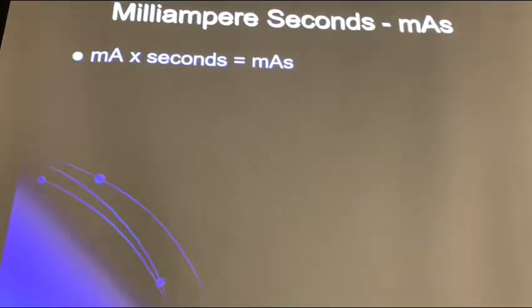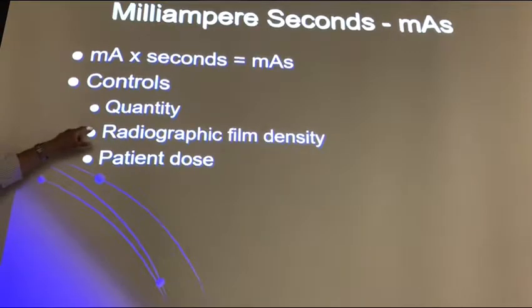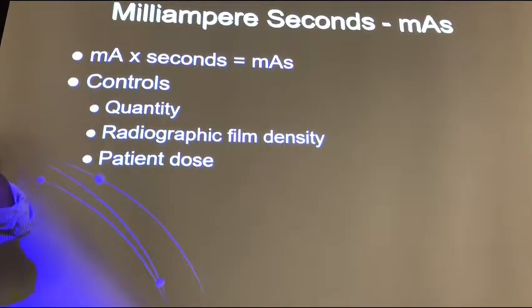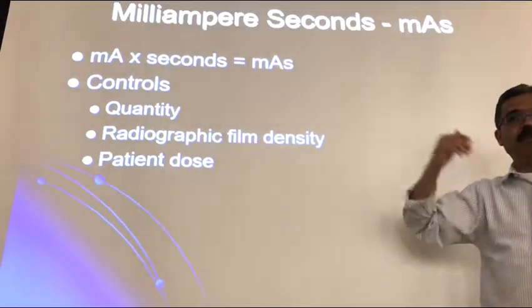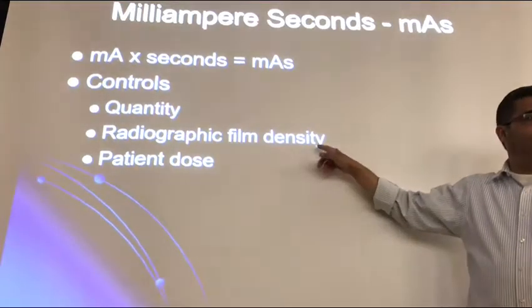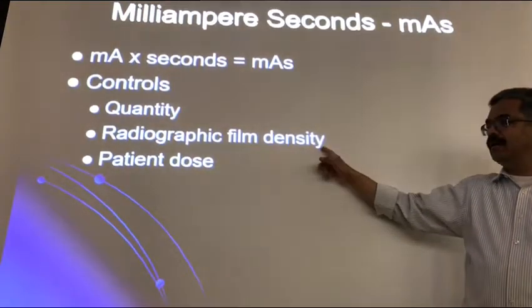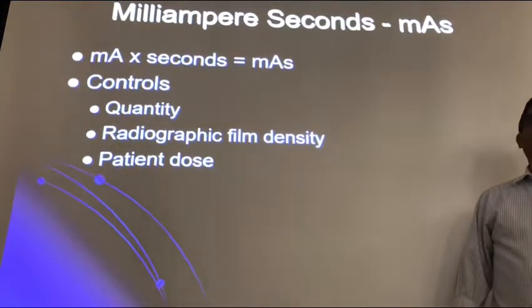MA times seconds gives you MAS, which controls the quantity of photons. If you were using film, MAS controls film density — if you double the MAS, you double the density. There is a direct relationship. However, can we say the same thing with computerized systems? No, you cannot.